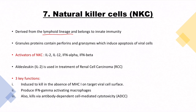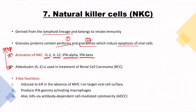Natural killer cells (NKCs) are derived from the lymphoid lineage. Their granules contain perforins and granzymes, which induce apoptosis. High yield: the activators of NKCs include IL-2, IL-12, interferon-alpha, and interferon-beta. IL-2 (aldesleukin) can be used as immunotherapy to treat renal cell carcinoma — a high yield point for Step exams.